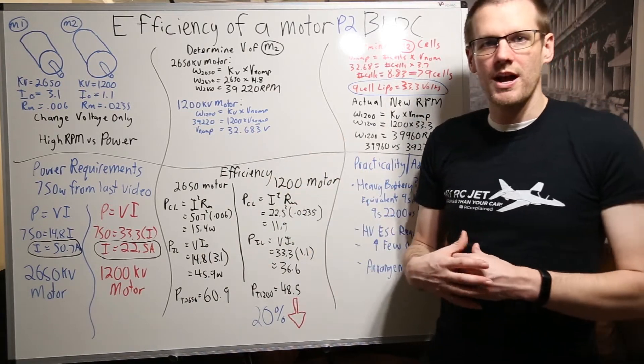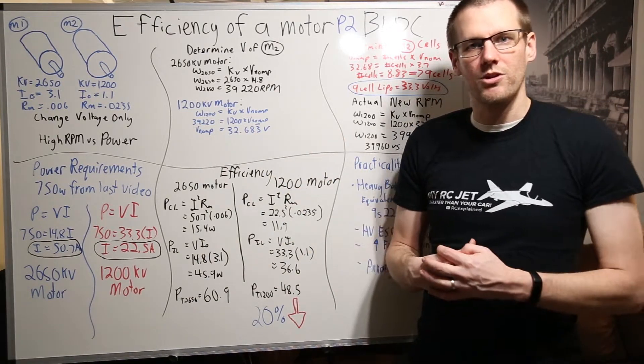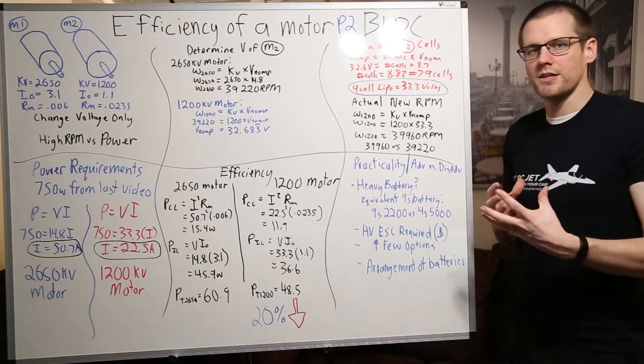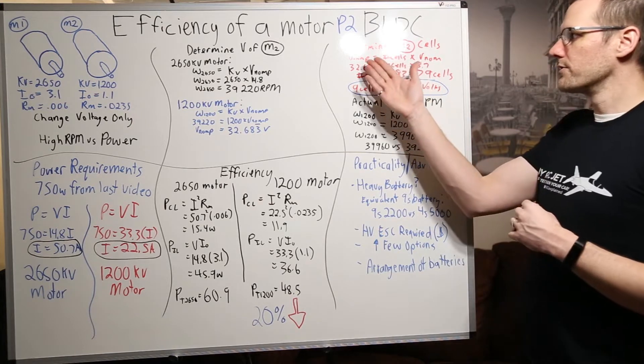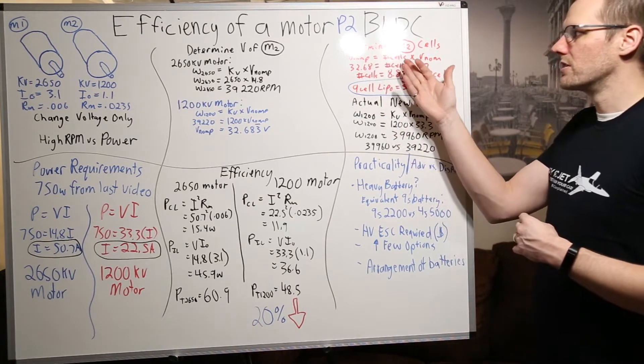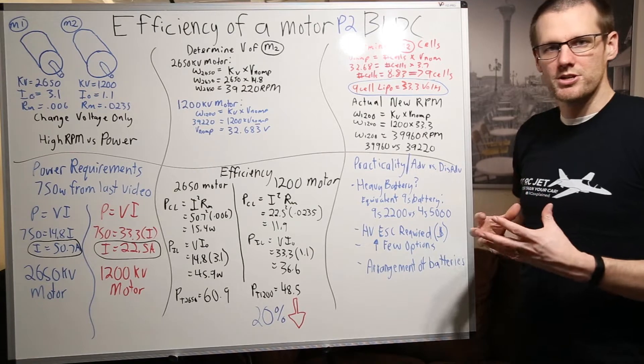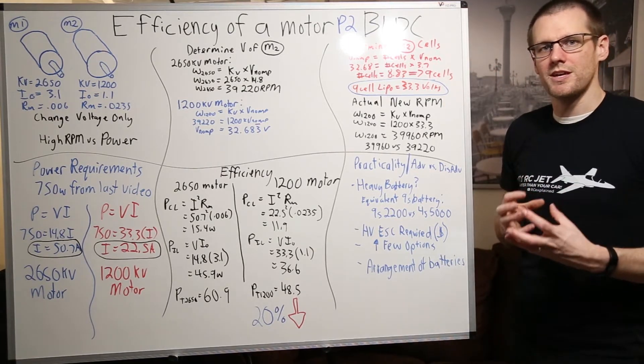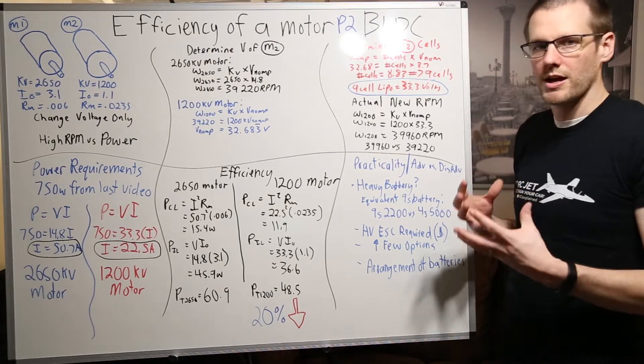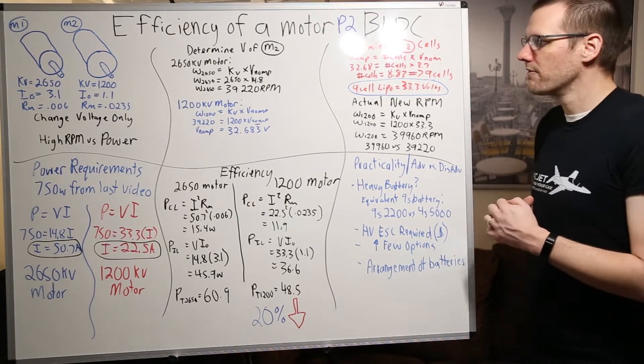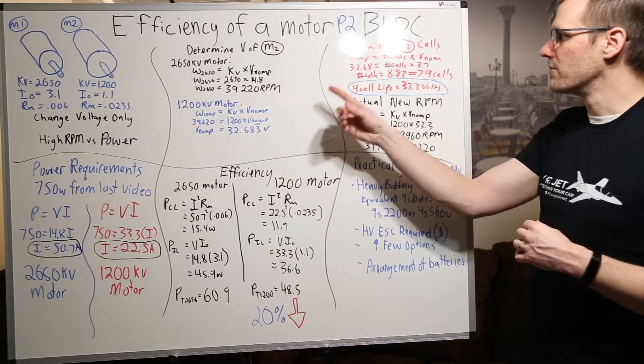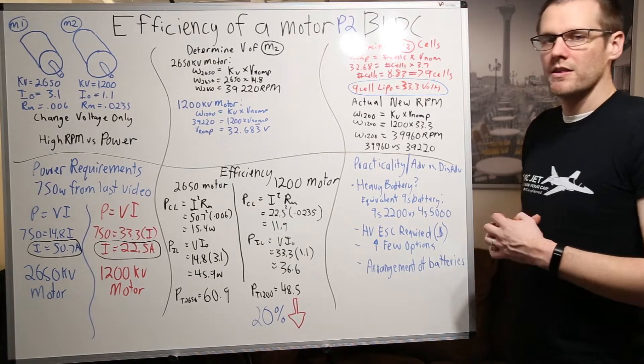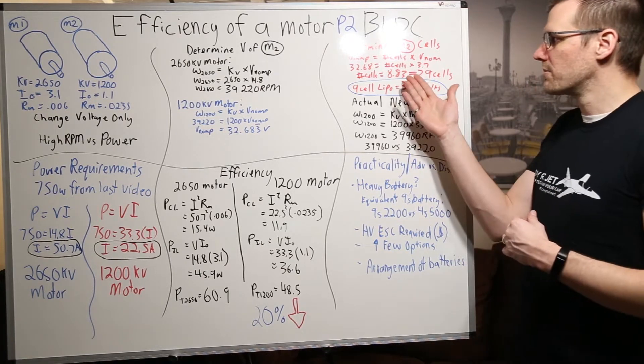What we now need to do is determine how many cells are we going to need within our lithium polymer pack. What we do in order to do that is come up with another formula that's going to represent the voltage nominal of the pack equal to the number of cells multiplied by the nominal voltage per cell. The nominal voltage per cell is going to be 3.7. That is the value typically used in RC for a lipo battery pack. We take our value of 32.68 that we just calculated and we set that equal to the number of cells multiplied by 3.7. The number of cells then equals 8.83.